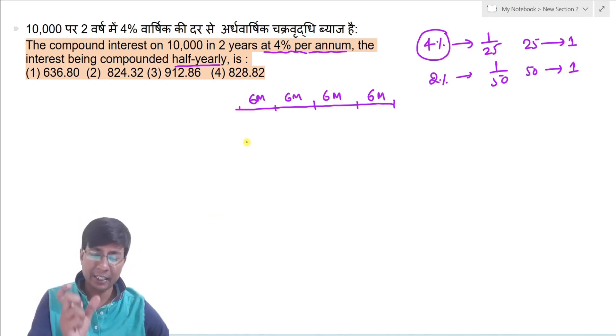Hume amount nikalna hai interest ka. Toh compound interest nikalne ke liye hum successive increase ka use karte hai. Toh humara initial value kitna tha, woh tha ten thousand. Us pe ab kaisa factor aega, char factor aega six month ka liye.